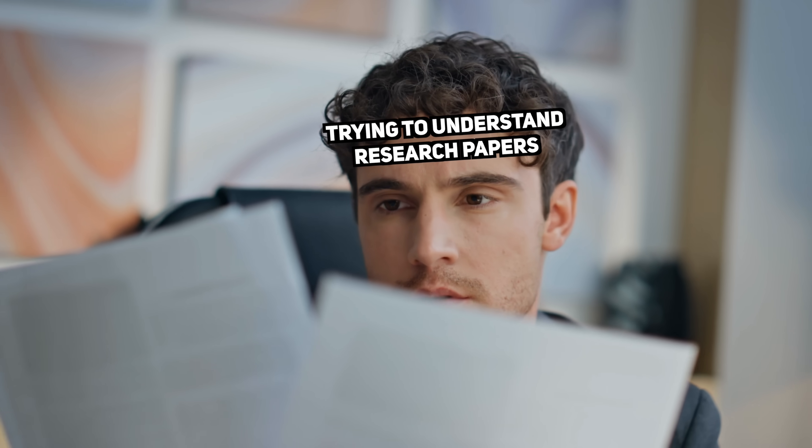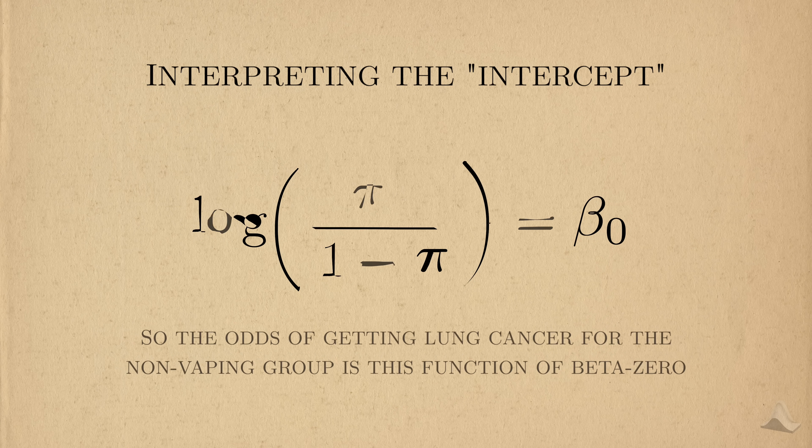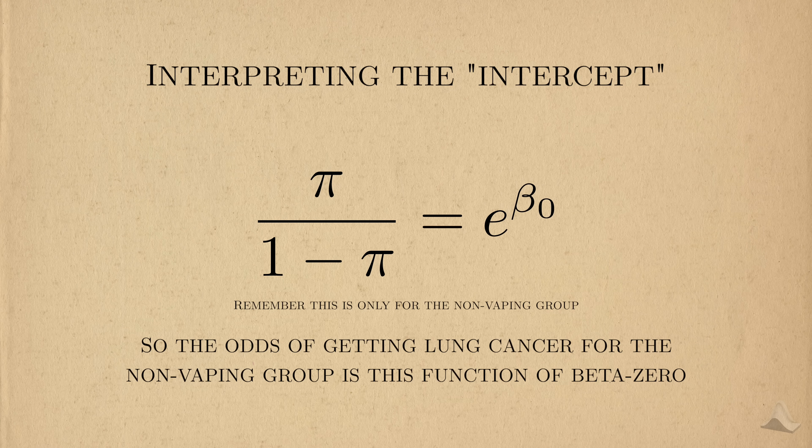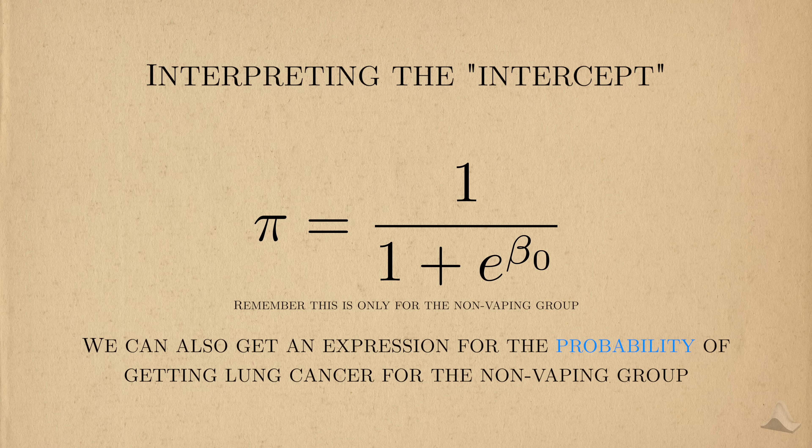But when we discuss the results of logistic regression with others, we often use the odds instead. The odds that someone in the non-vaping group will get lung cancer is e raised to beta 0. By inverting the logic function, we can get an expression for the probability of someone in the non-vaping group getting lung cancer.